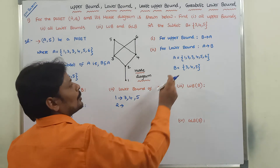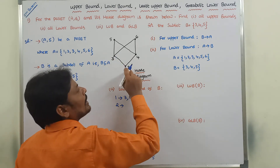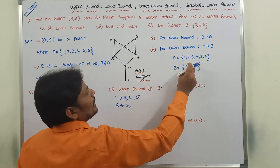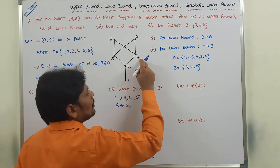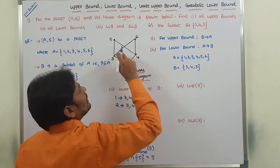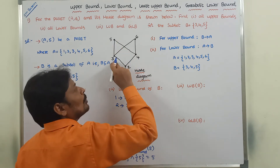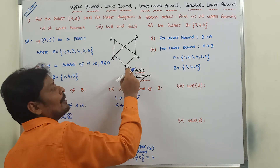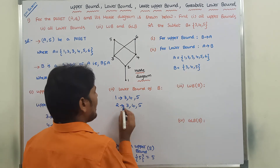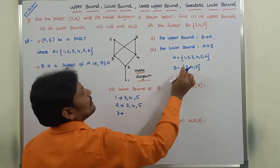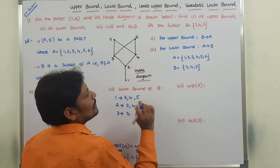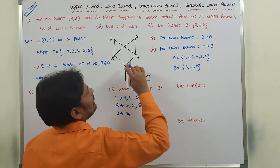Taking element 2: 2 is related with 3? Yes. 2 is related with 4? Yes. 2 is related with 5? Yes, by transitivity — 2 is related with 3, 3 is related with 5. So element 2 is related with {3, 4, 5}.